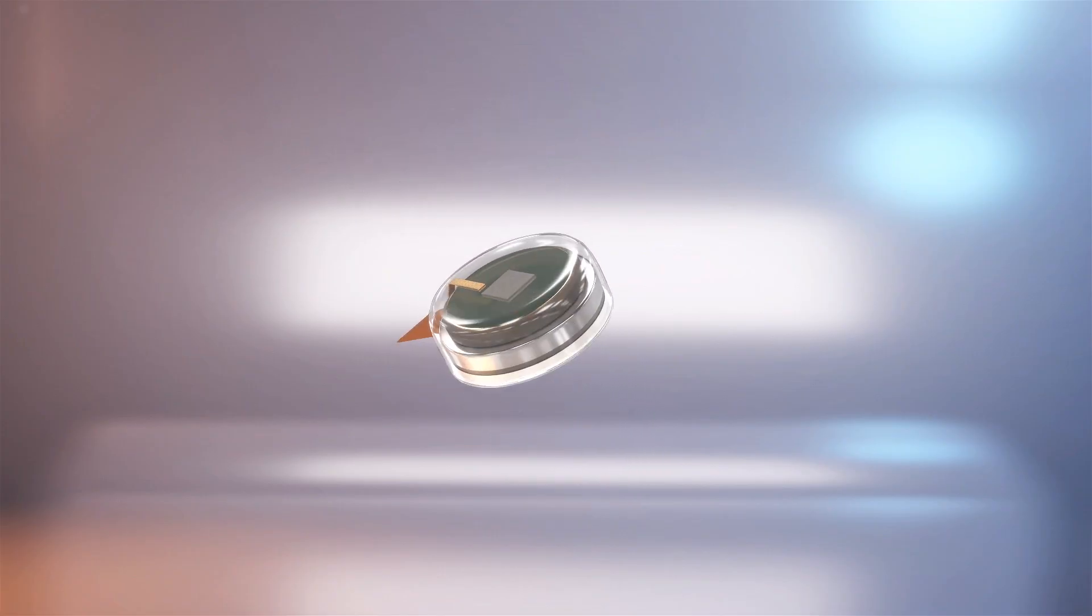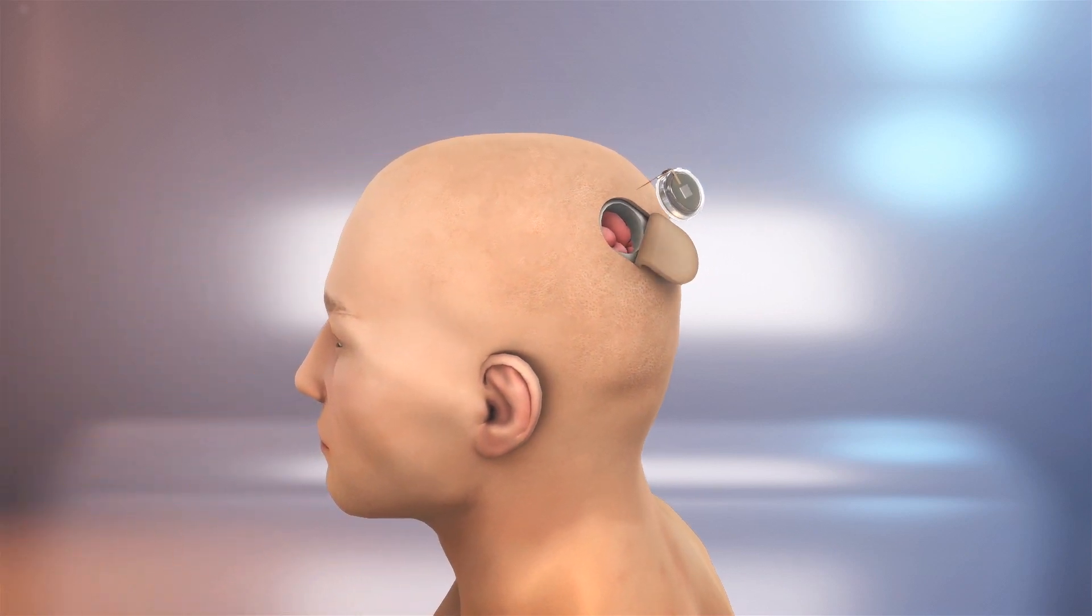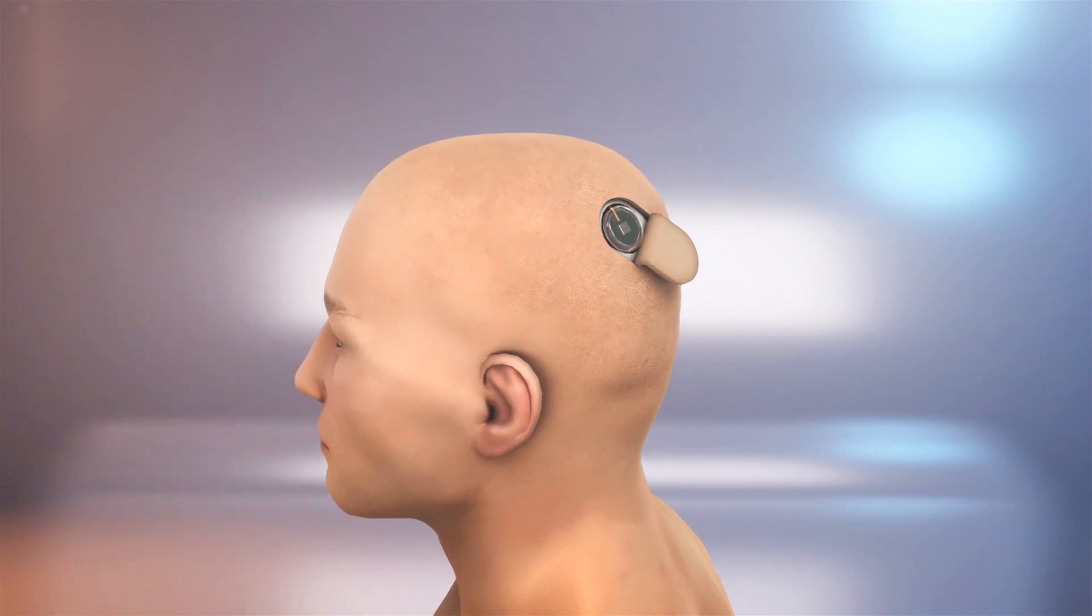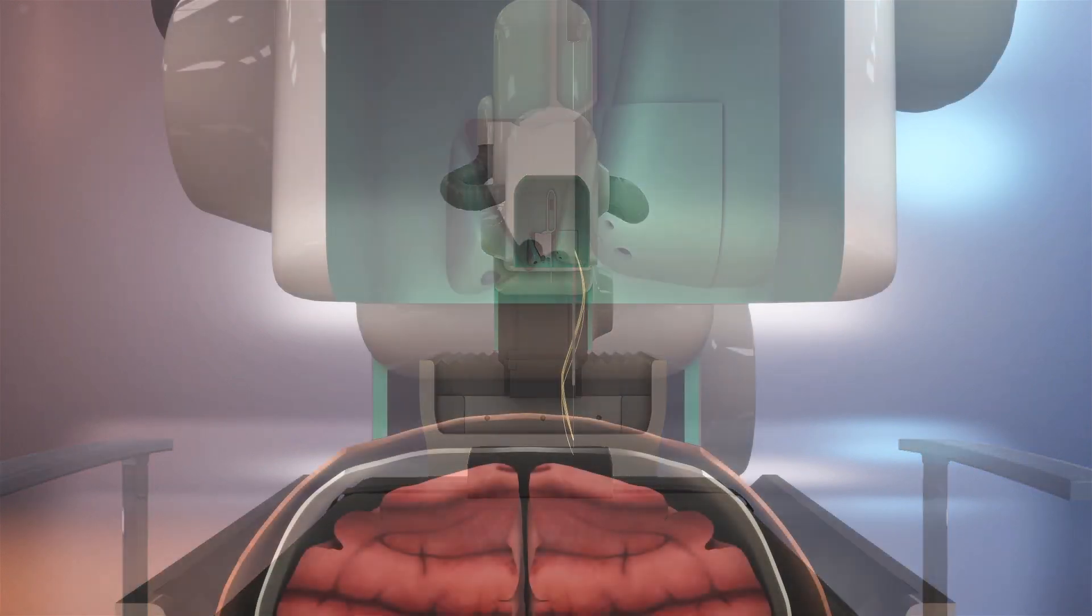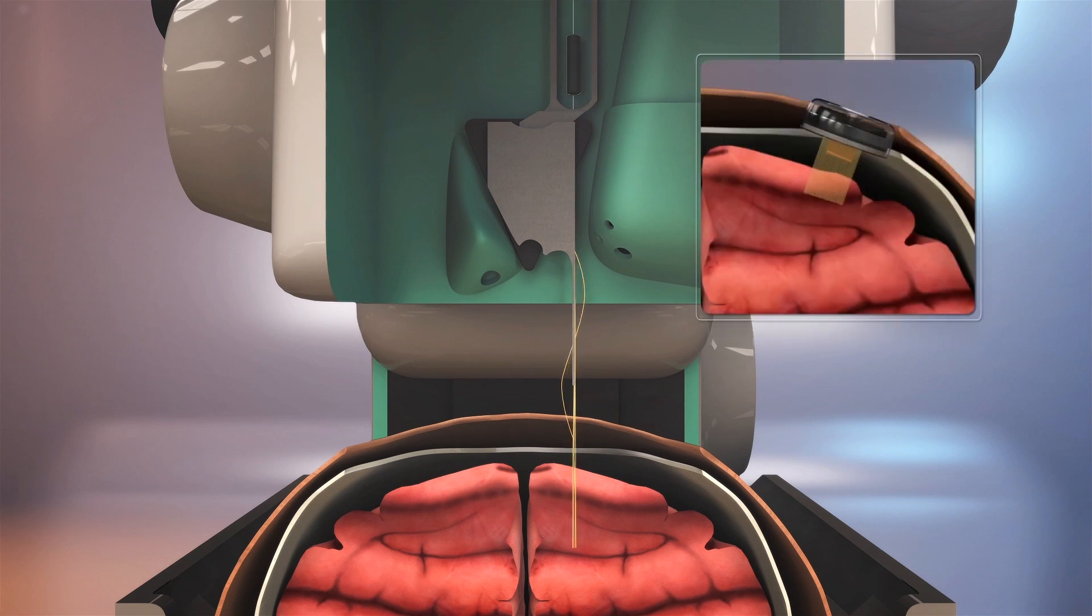In a presentation posted to Neuralink's YouTube channel, Musk says the implant is 23mm by 8mm and has electrode threads that attach to it that are implanted into the brain. The implant is inserted by removing a piece of skull. It then sits flush with the skull, unnoticeable to others beneath hair.